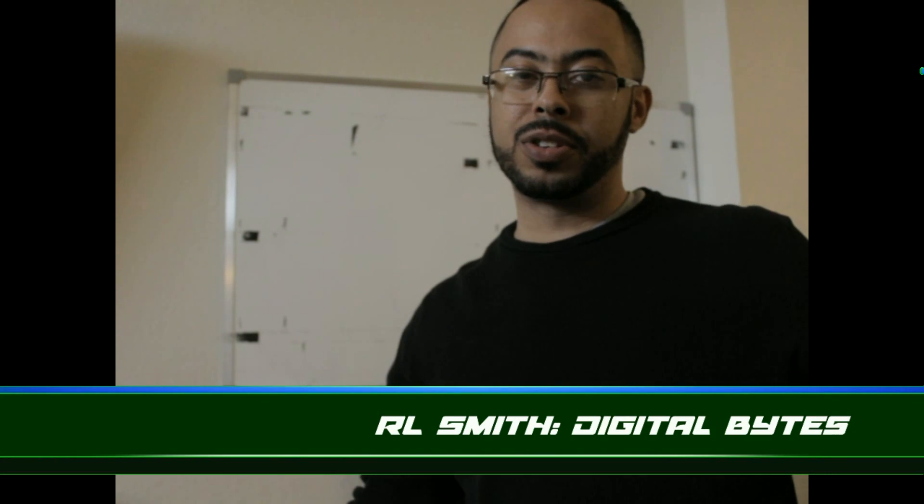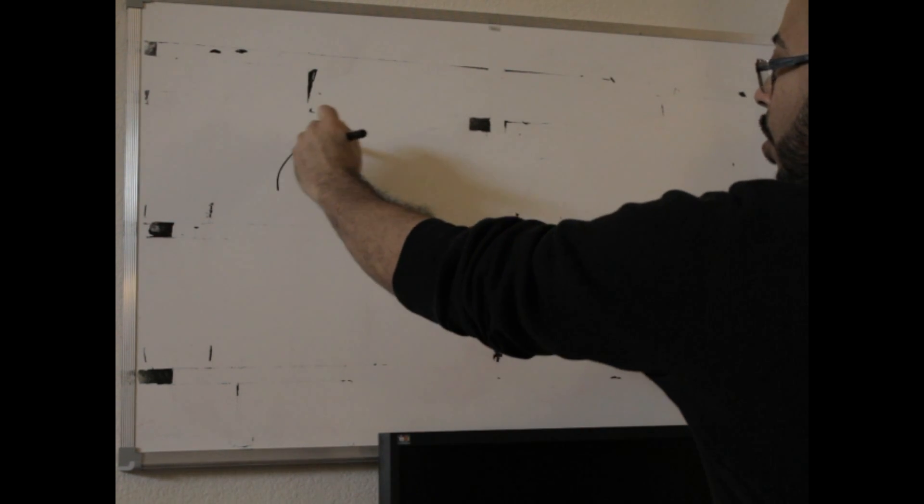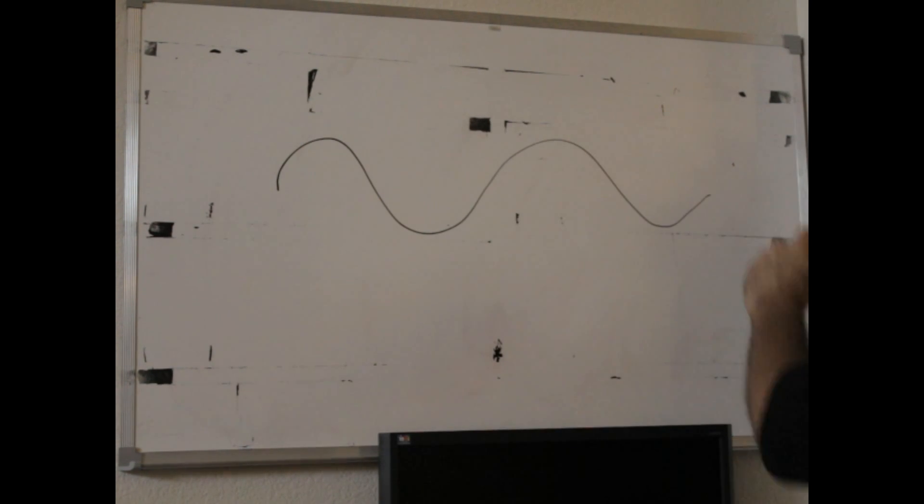This is RL with Digital Bytes. We're going to talk a little bit about the differences between digital and analog. This is an analog waveform or an AC waveform.